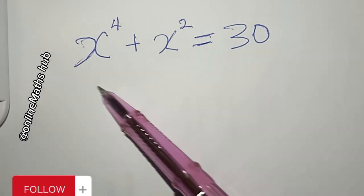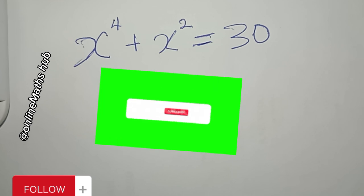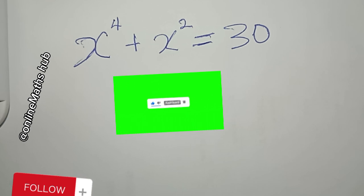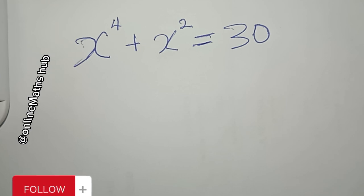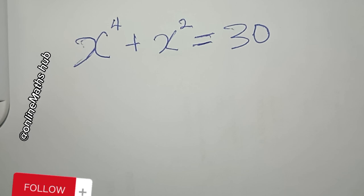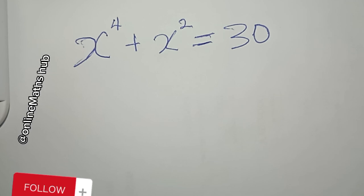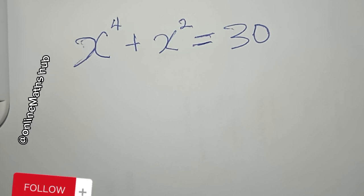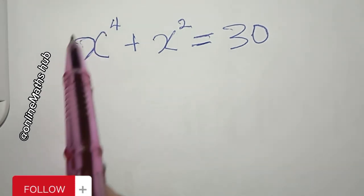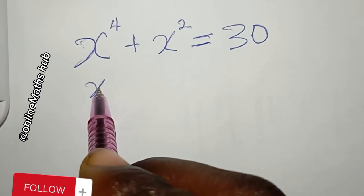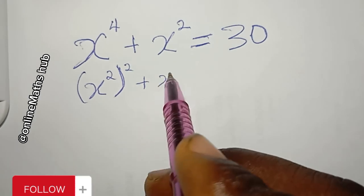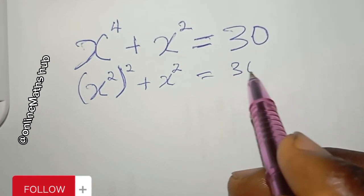We want to find the values of x that satisfy this equation. What I'm going to do is rewrite x to the power 4 as x squared, all to the power 2, plus x squared, equal to 30.